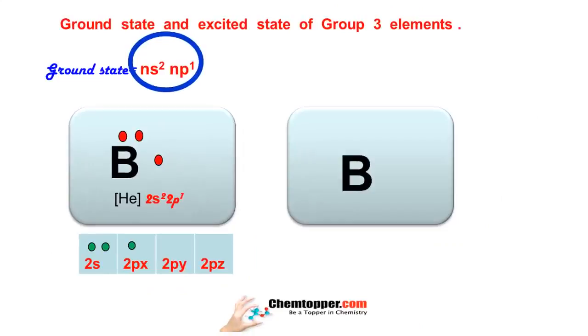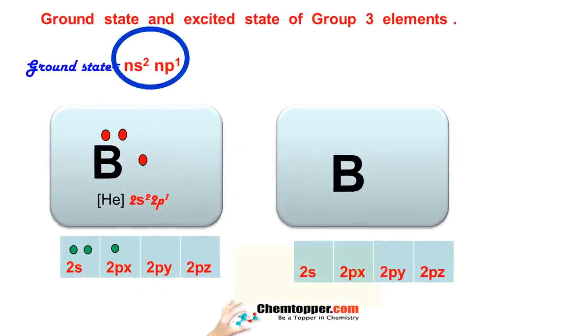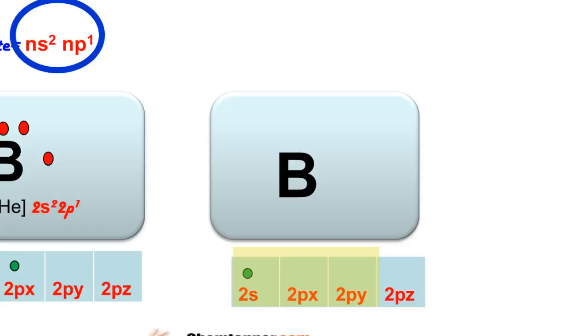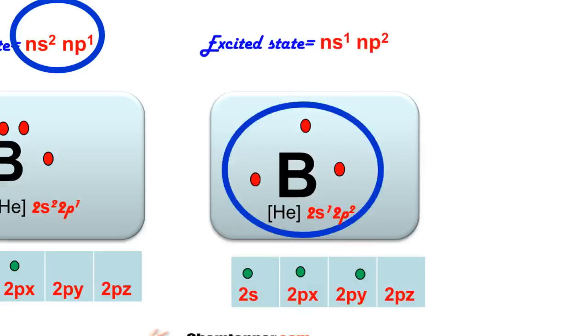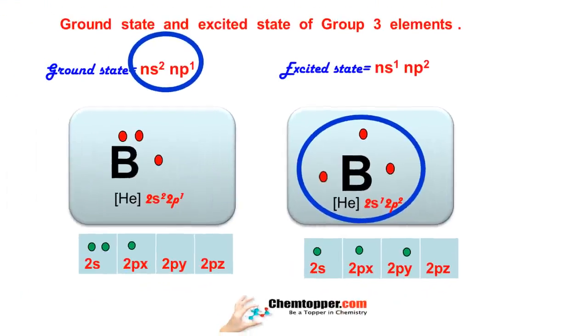In the excited state, for example, in case of boron again, one of the electrons will jump from 2s orbital to empty 2p orbital. Now it has 3 unpaired electrons in its excited state. All these 3 unpaired electrons are represented as 3 single electrons around the symbol of the element. So the general electronic configuration in their excited state is different.